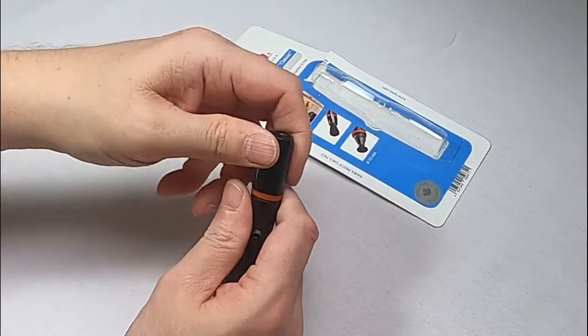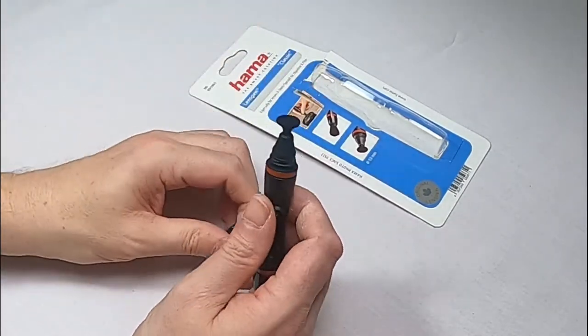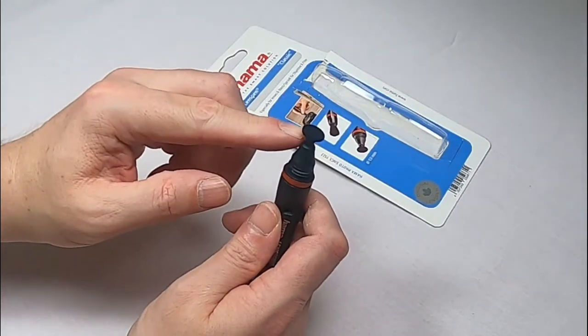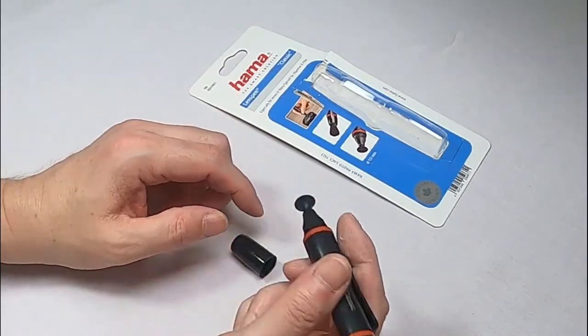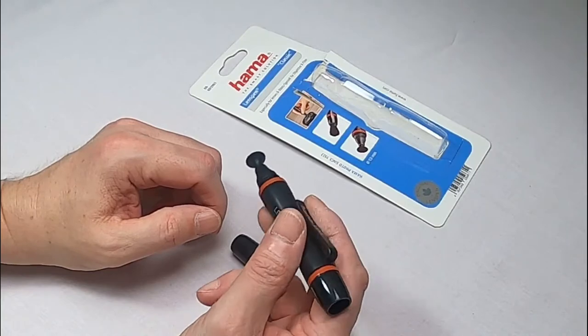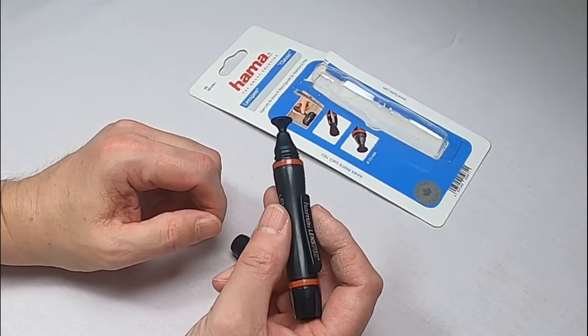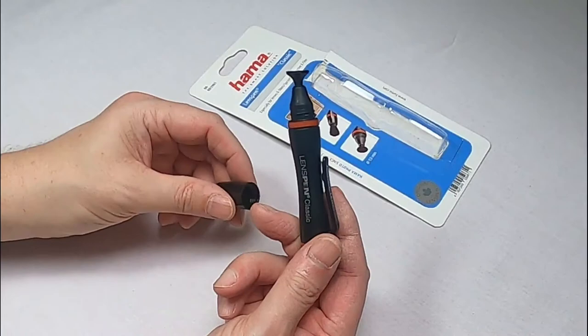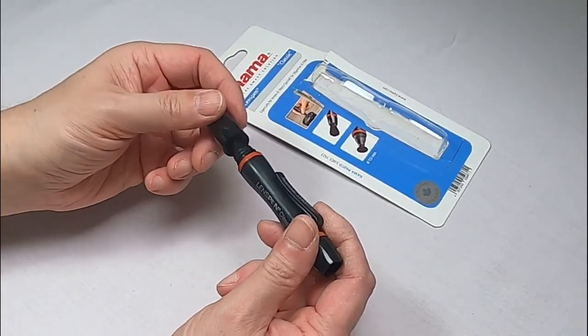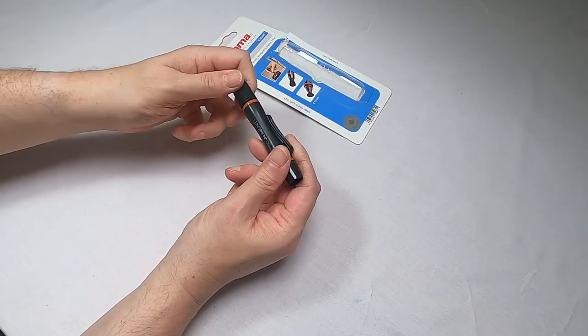And the other end then is a cap. Unscrew, take that off, and that then is the main cleaning. And again, that is against the lens in circular motions to clean the lens up. And that is basically it. There's not much to it, but they do come highly recommended for in the field lens cleaning.